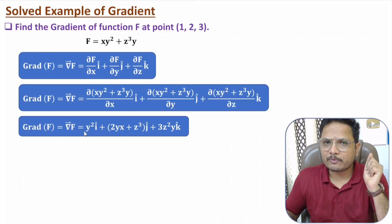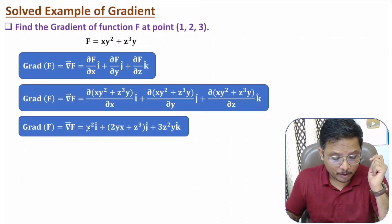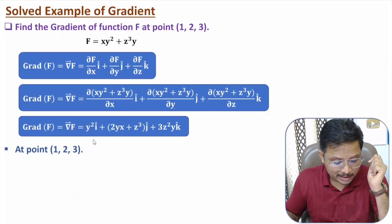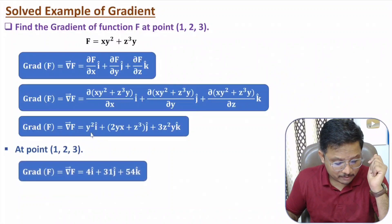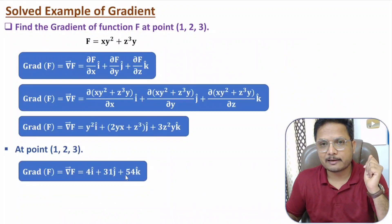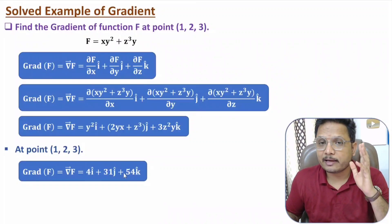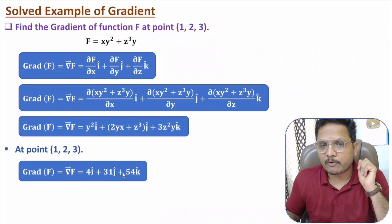Now we place the point (1, 2, 3): X = 1, Y = 2, Z = 3. You will get the final answer. That is how one can identify the gradient of a function.